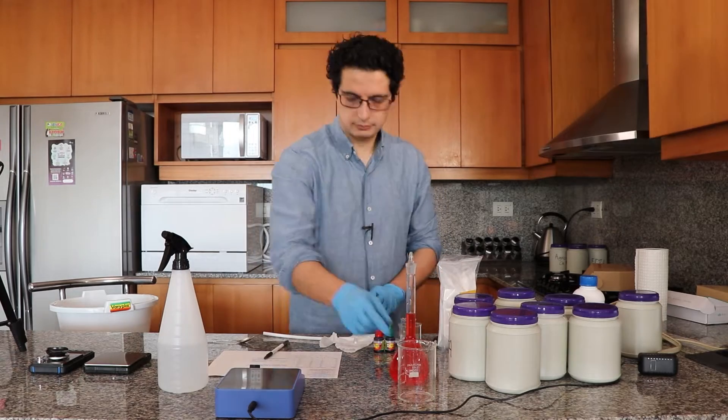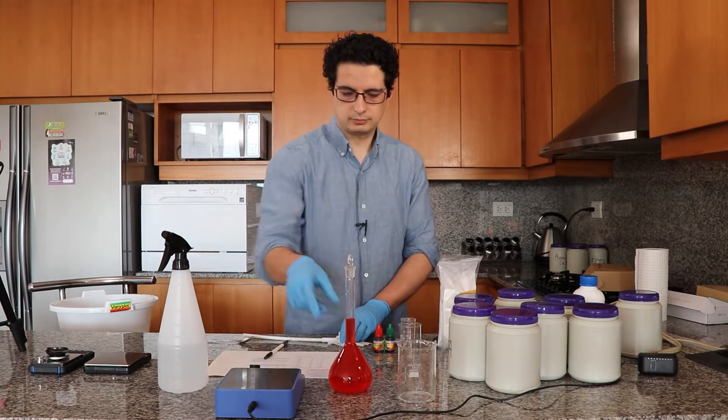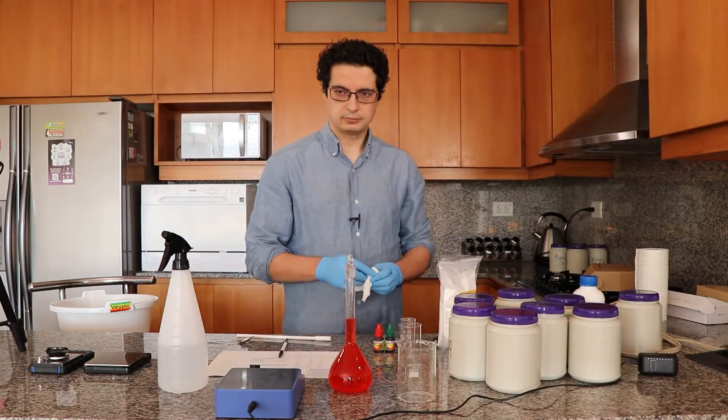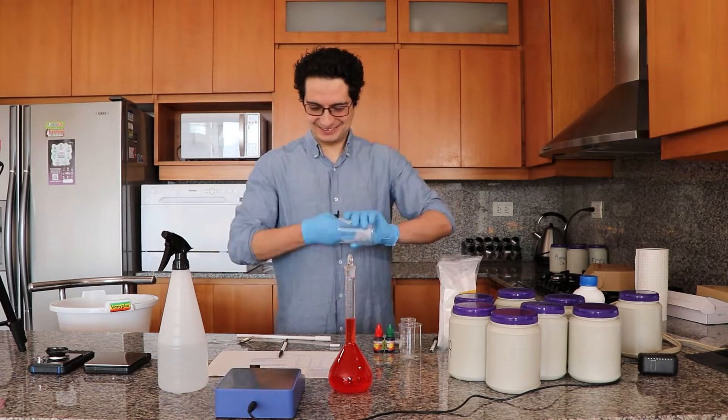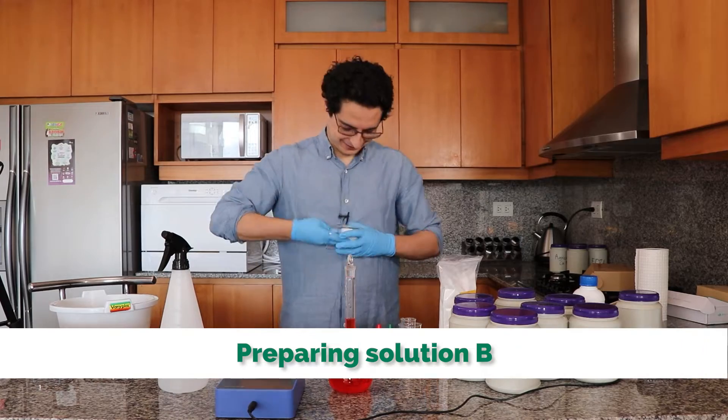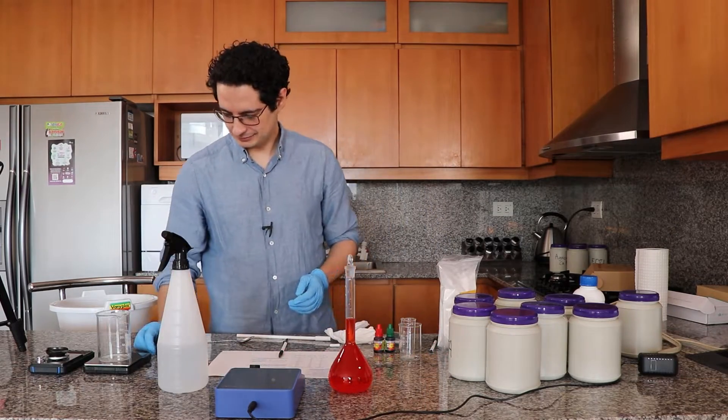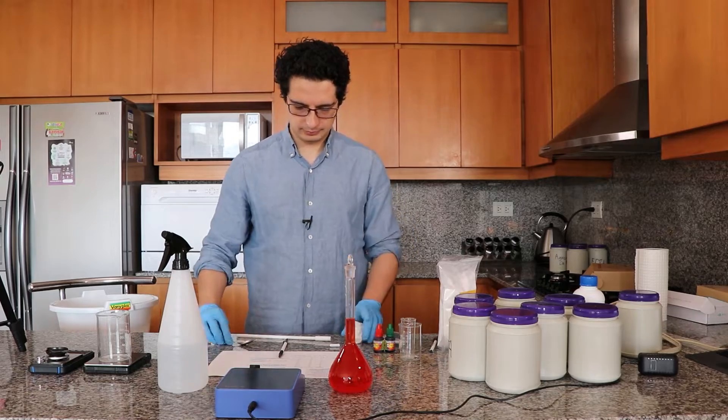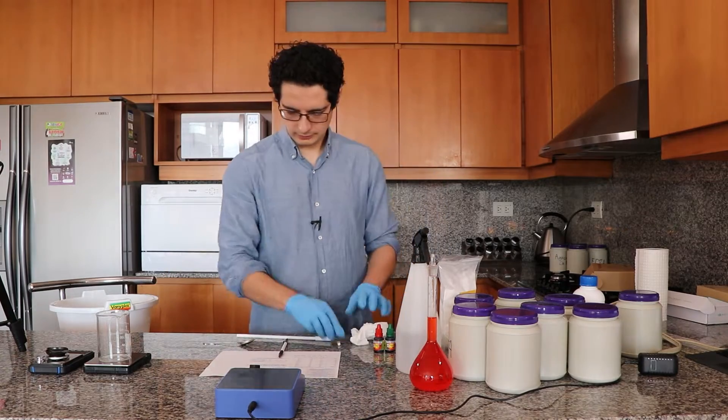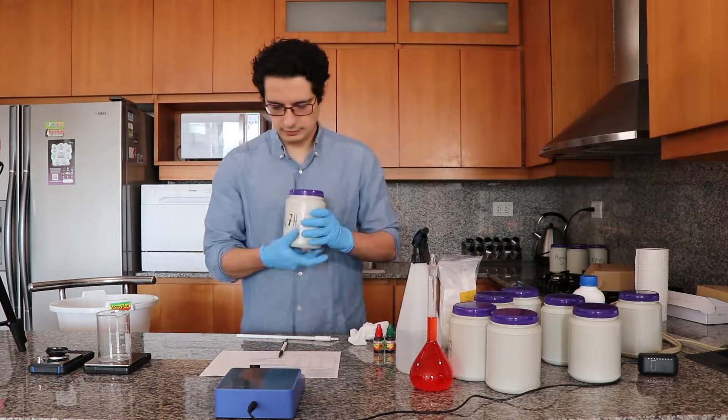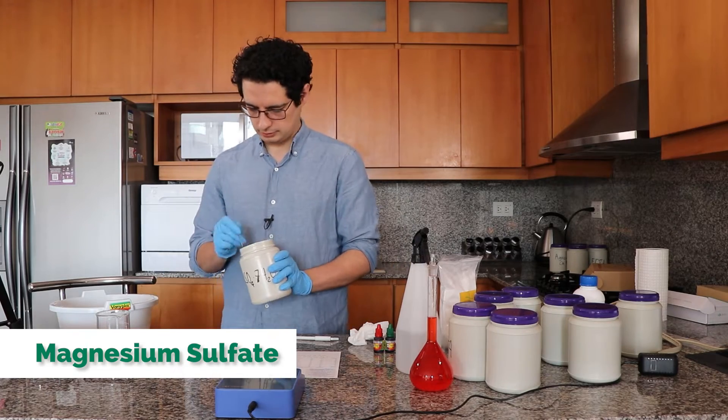And now we're done with solution A and I'm going to proceed with the preparation of solution B, which is significantly more complicated. So I'm going to start again by cleaning this beaker, and we're going to start with the heavier salts first, with the ones that we need to weigh the most of. So I'm going to start with the magnesium sulfate.